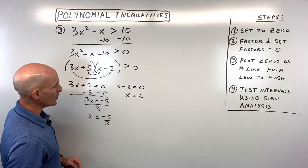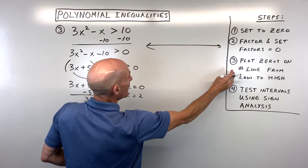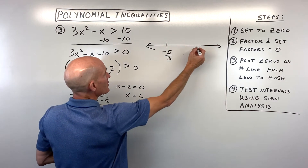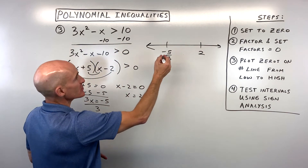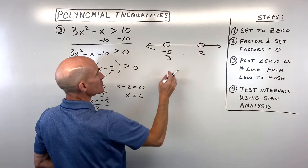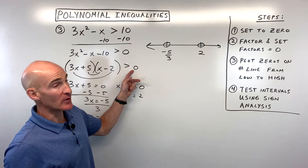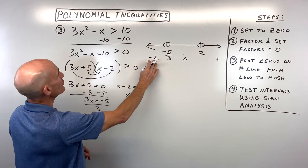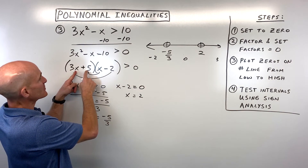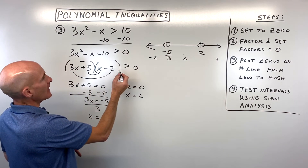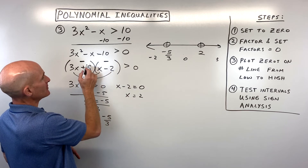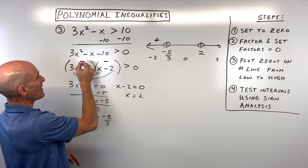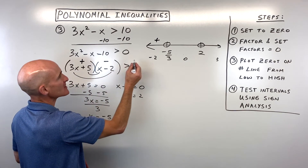Setting the factors to zero: 3x plus 5 equals 0 gives x equals negative 5 thirds; x minus 2 equals 0 gives x equals 2. Plot on the number line: negative 5 thirds on the left, 2 on the right. The inequality is strictly greater than 0 — open circles at both points. Testing negative 2: negative 6 plus 5 is negative 1 (negative), and negative 2 minus 2 is negative 4 (negative). Negative times negative is positive.